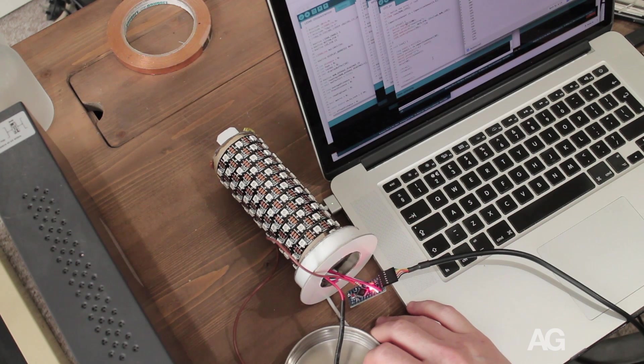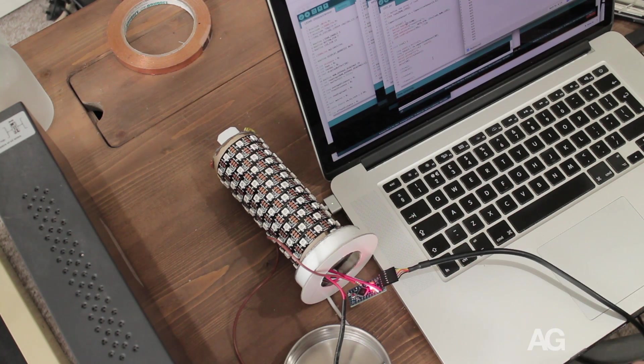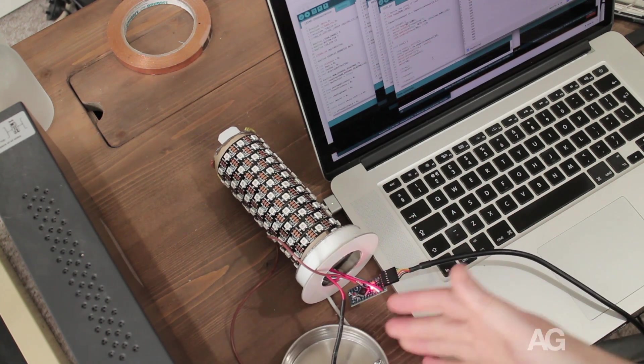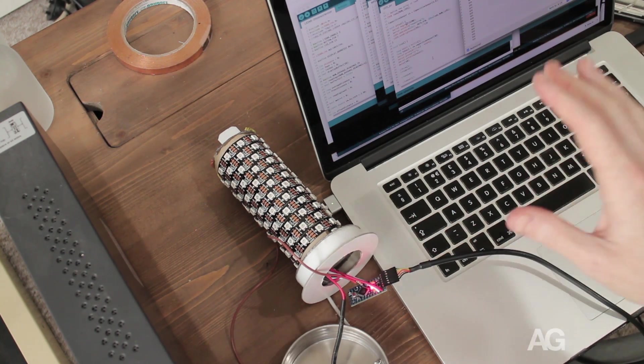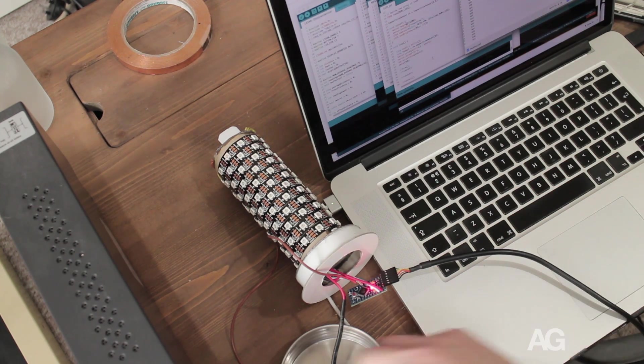But then whenever you touch the receive pin you form a resistor capacitor network, which takes time to charge up. And so there's an increasing delay between the transmit and the receive pin. And by looking at that delay you can detect the presence of somebody touching the pin.